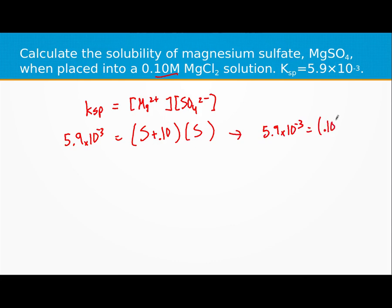So this just stays 0.1 roughly and this is S. If we do that, we can solve that math very easily and get an S of 5.9 times 10 to the negative second.